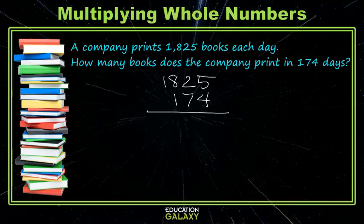So we start with 1,825 times the 4. 5 times 4 is 20, carry the 2. 2 times 4 is 8, plus the 2 we carried is 10. 8 times 4 is 32, plus the 1 is 33, carry the 3. 1 times 4 is 4, plus the 3 is 7.